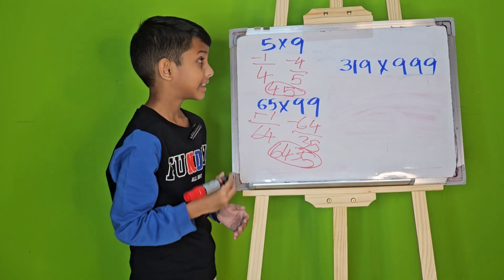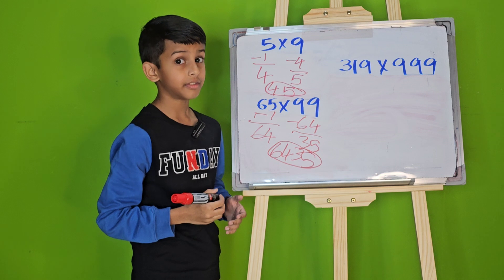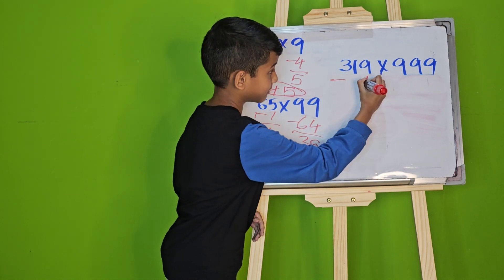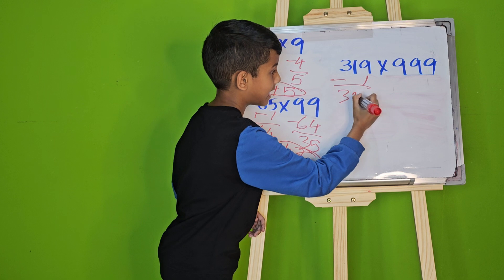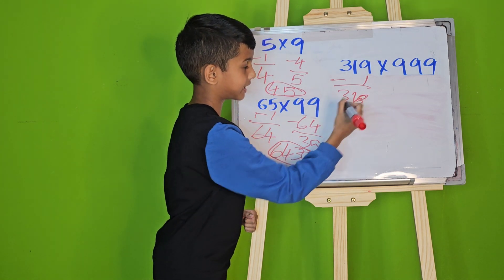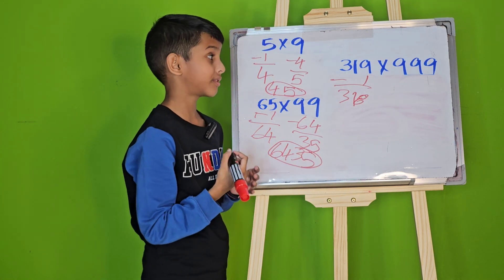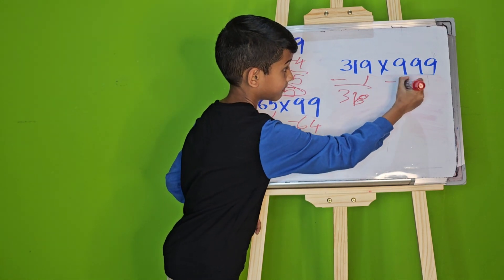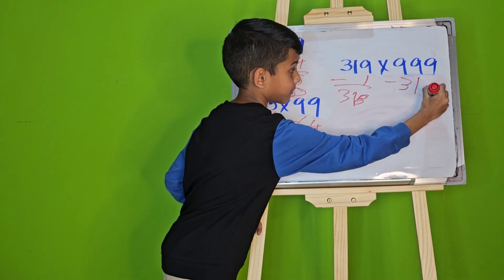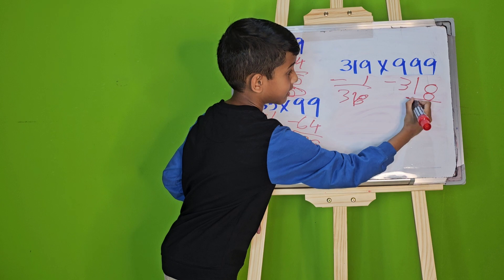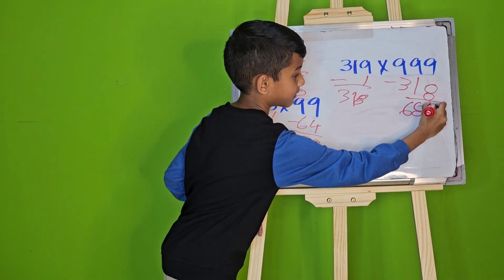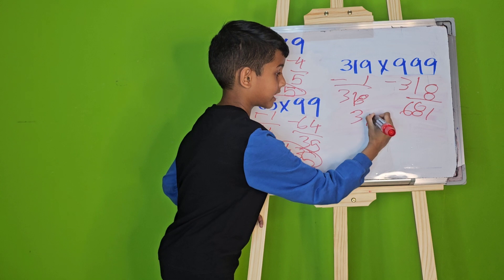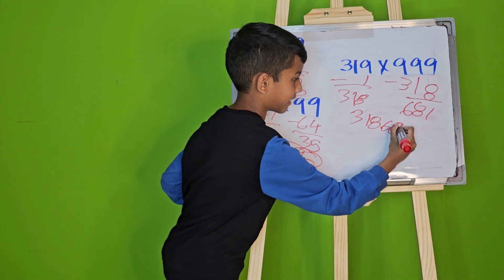Now, let's try 319 times 999. First, reduce 1 from 319 and we will get 318. Now, reduce that result from 999 and we will get 681. Now, our answer is 318,681.